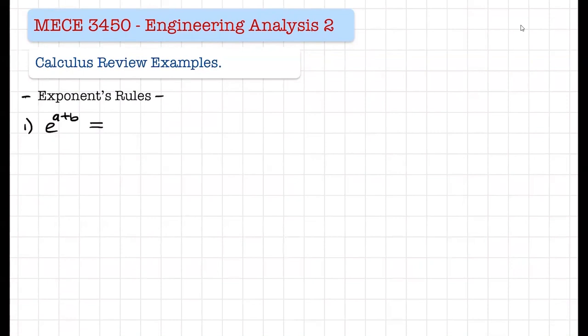Hopefully from calculus you remember that when the powers are a sum, it can be rewritten as a multiplication of two exponentials: e to the a times e to the b. If we have e to the a minus b, what will that one look like?